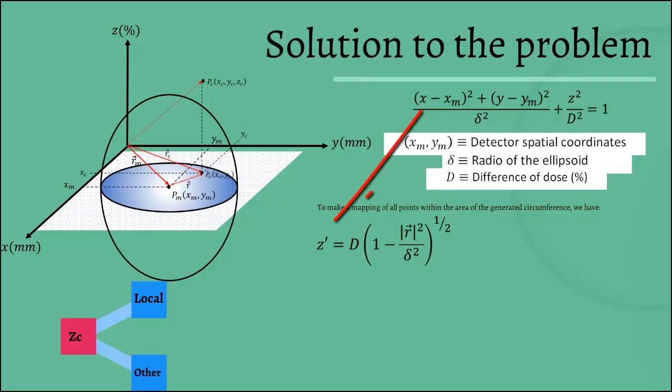So Z prime is valued as all absolute value of R less than or equal to delta. Where we know that vector R is the difference between the position vector calculated minus the position vector measured.